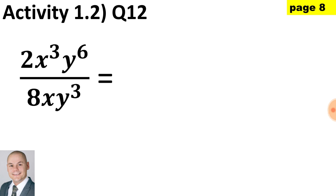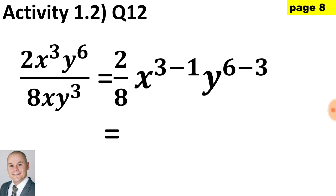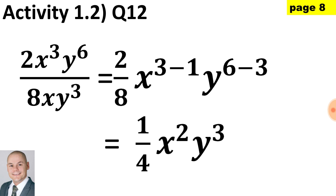This is our final question. We have a fraction with the coefficient of 2 over 8, which when simplified gives us a quarter. When dividing bases that are the same we subtract the exponents. Therefore 2 over 8 with base x having exponent 3 minus 1 and base y with exponents 6 minus 3 gives us a quarter multiplied by x to the 2 and y to the 3.